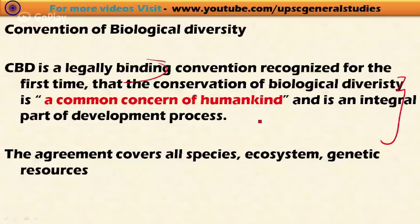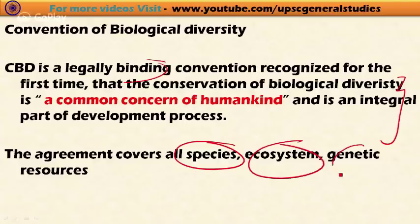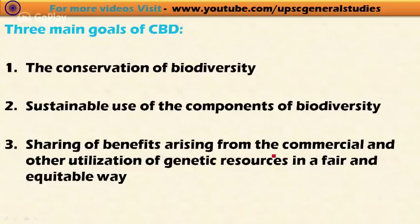The agreement covers not only major plants and animals, but goes even to the smallest species like bacteria and fungi, and all ecosystems and genetic resources. The convention has three important goals: first, conservation of biological diversity; second, sustainable use of components of biological diversity.